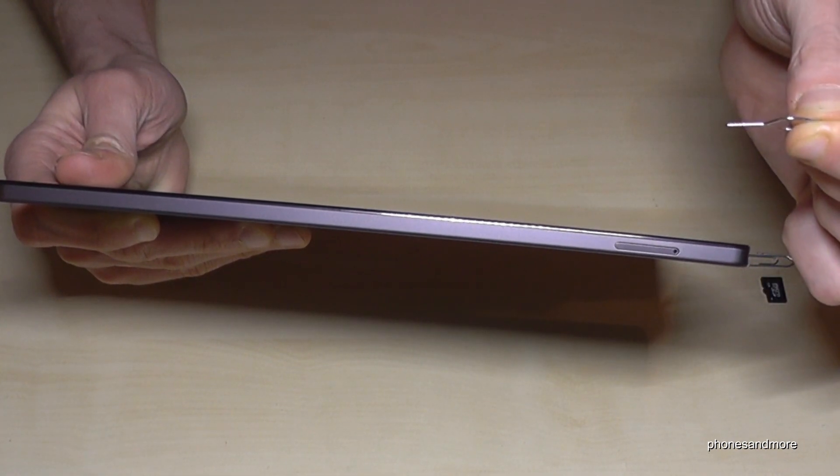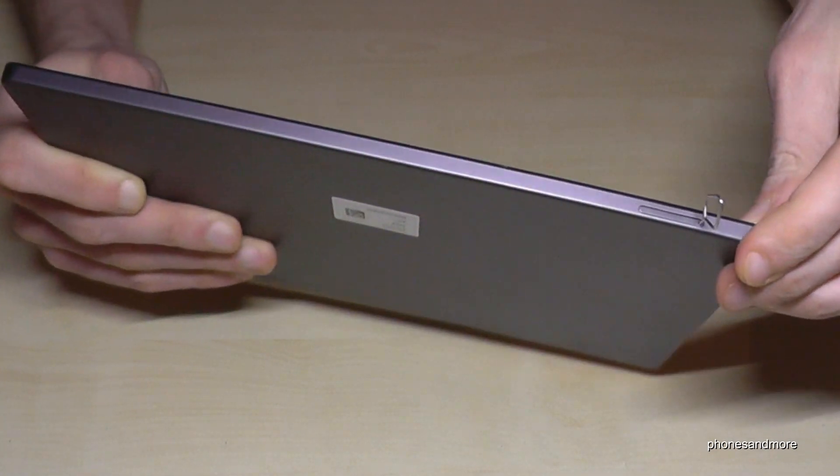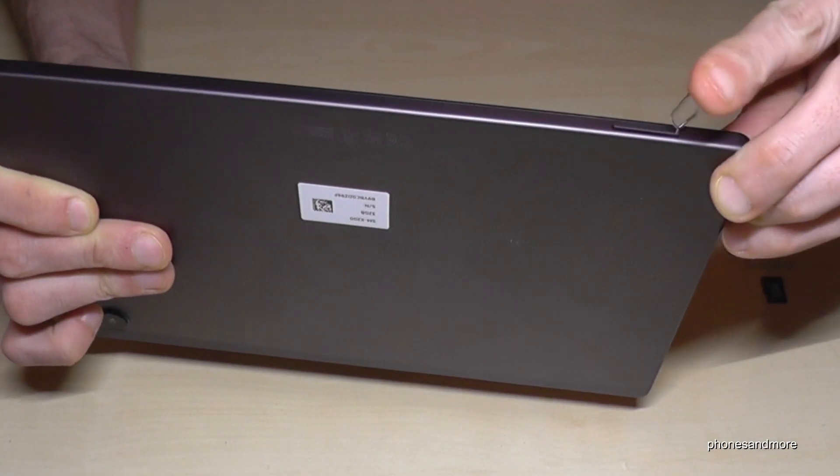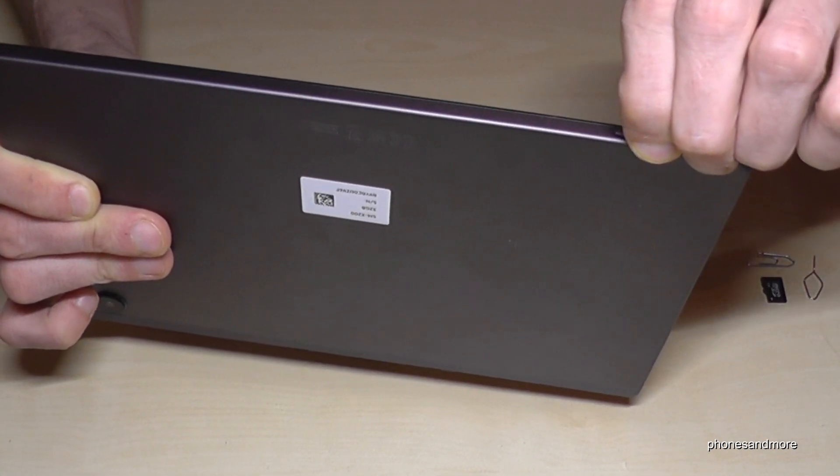Now with the edge of the SIM ejection tool or the paper clip, you enter that hole and just press a bit. The SIM tray will come out.